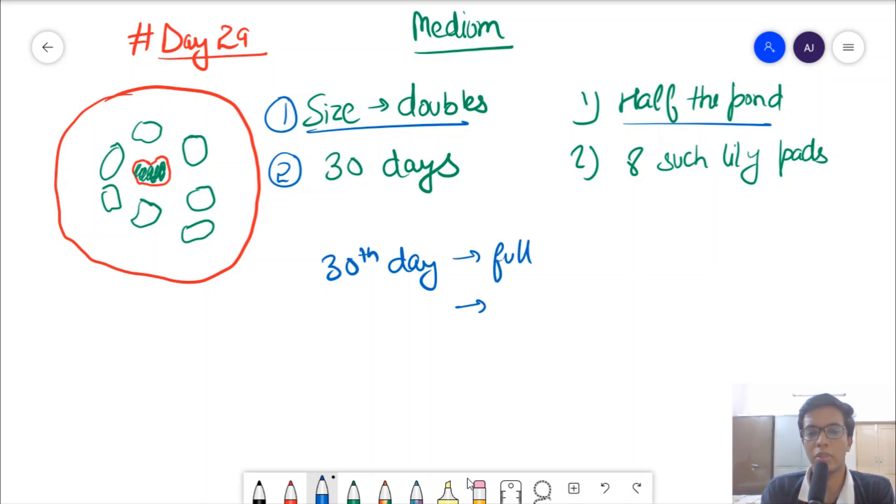Then when will it be half? Half will be one day before, because every day it doubles. So 29th day, very simple. First part was very simple. So first part was 29th day. It was fairly easy, you could have thought of this.